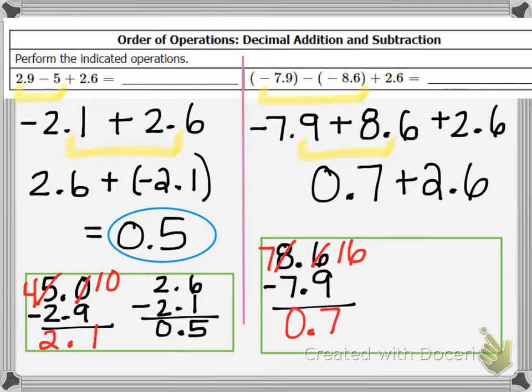So it's like 70 cents plus $2.60. You'd have $3.30. So our final answer is 3.3 because both numbers were positive. 0.7 and plus 2.6.